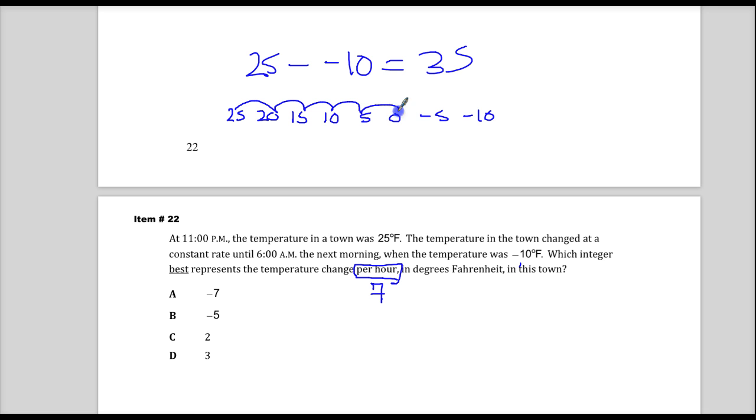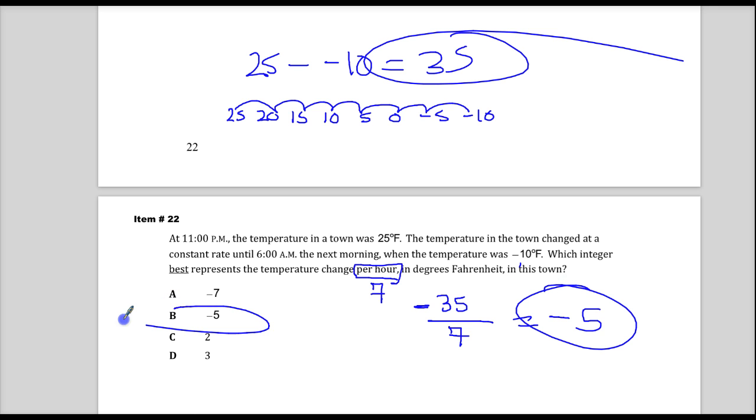5, 10, 15, 20, 25, 30, 35. So all I need to do is 35, and it's going down, by the way, so that's negative 35 over 7. And you get negative 5 right there.